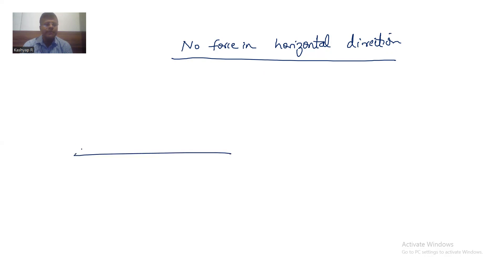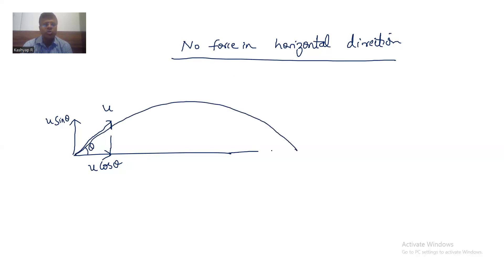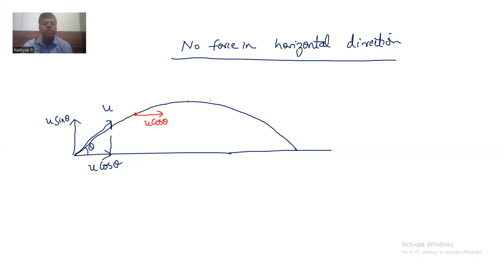If I project a body with a velocity u making an angle theta with the horizontal, I can resolve this velocity into two components: the u cos theta component and the u sin theta component. In the horizontal direction, if there is no force, there is no reason for the velocity to change. So at any point — at this point, at the topmost point, or anywhere along the path — the horizontal velocity continues to remain u cos theta, according to Newton's first law.